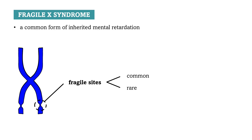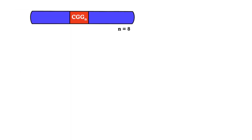One of these fragile sites is located on the X chromosome and contains a trinucleotide repeat — cytosine, guanine, guanine. This trinucleotide is part of the FMR1 gene, the Fragile X Mental Retardation gene 1.